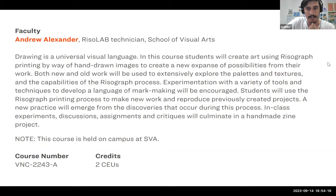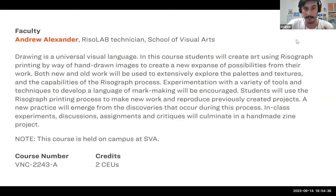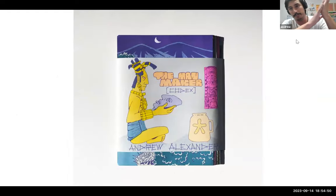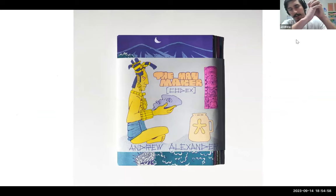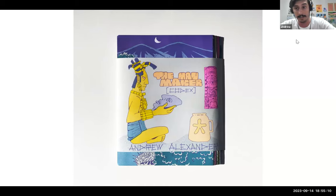Both new and old work will be used to explore palettes, textures, and the capabilities of the risograph process. Experimentation with a variety of tools and techniques to develop a language of mark-making will be encouraged. Students will use the risograph printing process to make new work and reproduce previously created projects, and new practice will emerge from discoveries in the process. In-class experimentation, discussion, and assignment critiques will accumulate in a handmade zine project. The class is broken into two halves: the first five weeks dedicated to learning the risograph and techniques like spot coloring, posterization, and CMYK.